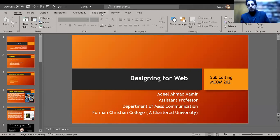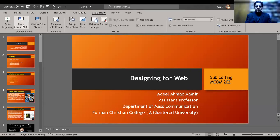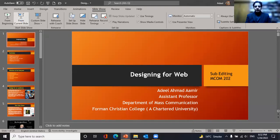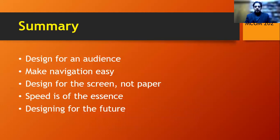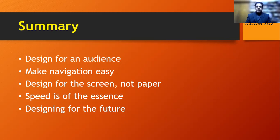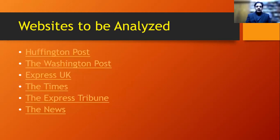Designing for web — we have talked a lot about how to design for print medium, but when we talk about designing for websites it's slightly different. What we are going to learn in this module is how to design for an audience who is globally connected, who use internet and web pages, how to make navigation easy, design for the screen not for the paper, and because we are working for online medium, speed is very much important. Everything is happening so quickly online — everyone is breaking new stories and updating their websites constantly, so you have to be more vigilant compared to the print medium.